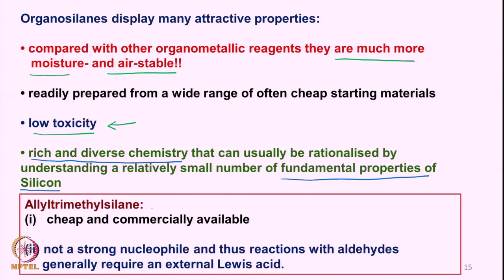If we simply take allyl trimethylsilane — the basic allyl trimethylsilane reagent — of course there are many other substitutions we can place on silicon besides methyl. This particular reagent is relatively cheap and commercially available. It is not a very strong nucleophile unless we add an external Lewis acid. So allyl silanes are robust and therefore can react only in the presence of a Lewis acid.